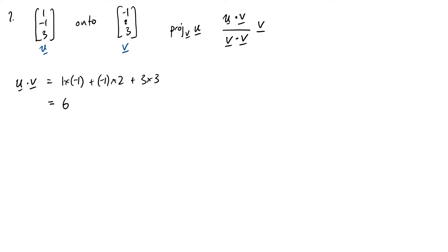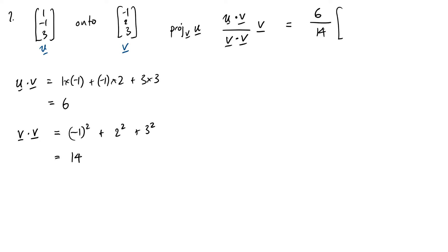And then v dot v — that's the other product I want, which is the length of v squared. Don't forget that. That's going to be (−1)² + 2² + 3², which is 1 + 4 = 5, plus 9 = 14. Therefore, if we plug this into our formula, we'll get u dot v which is 6, divided by v dot v which is 14, all times the vector v itself, which is (−1, 2, 3). That 6 over 14 is the scalar a that we were looking for earlier.